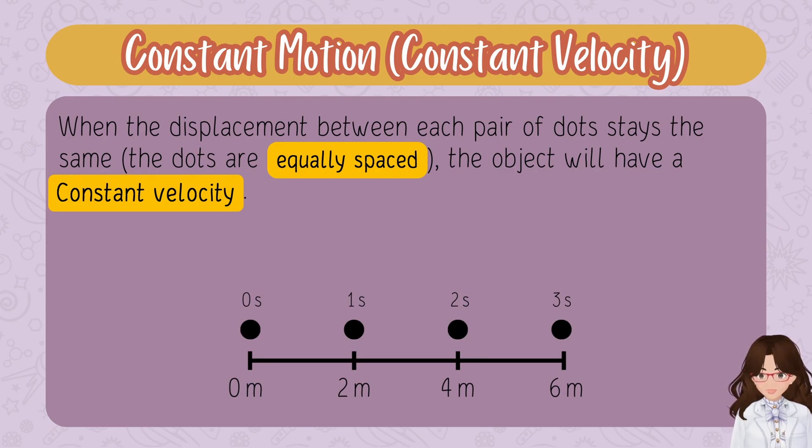Now let's look at it on a larger scale. When the displacement between each pair of dots stays the same, or they're equally spaced, the object will have a constant velocity. For example, Δx = 2m and Δt = 1s. Notice that between every two points, the displacement is two meters. Zero to two meters is a two meter difference, two to four is two meters, four to six is two meters. Also notice that if each dot represents one second, then Δt is one second. One minus zero is one, two minus one is one, three minus two is one. So the velocity is two meters per second for every point on this motion diagram.